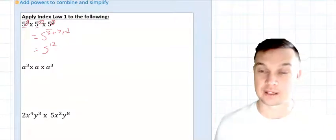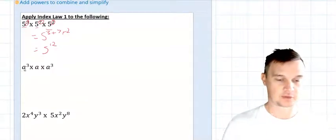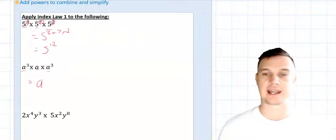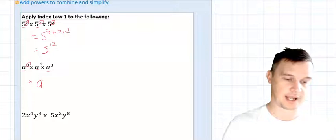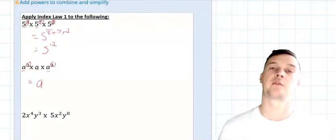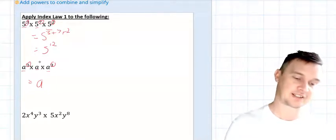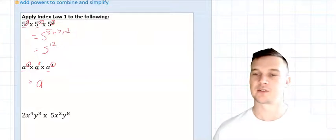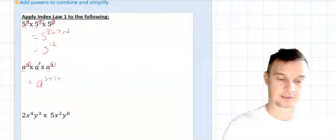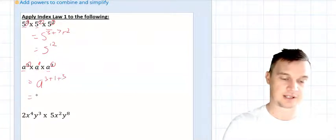In another example, we can often get confused with this one. So again, I can look and I've got the same base, which will be a. So I can start with a as my base, and then I'll look across now at the powers, and I have three and I have three. But I have nothing there, but we know from algebra that if there's just an a, there's kind of a little one just above that, because it is only just one. So now I can just add them together, so I have three plus one plus three, which will give me a to the power of seven.